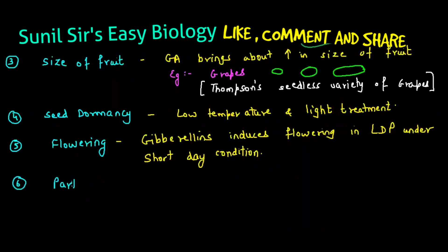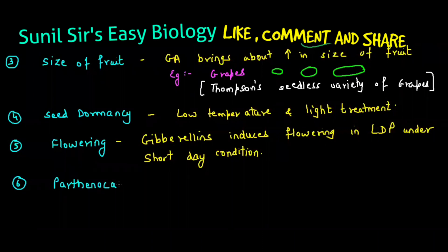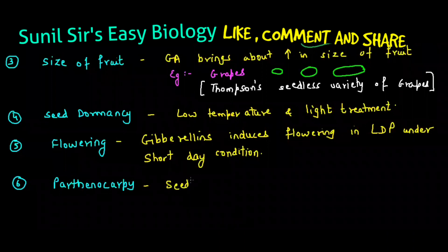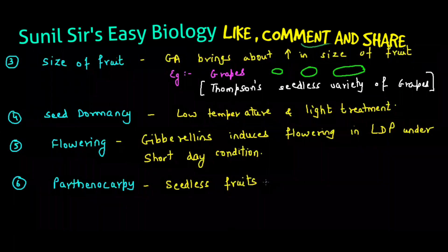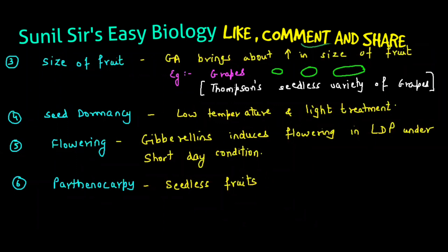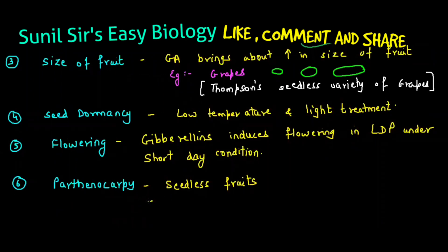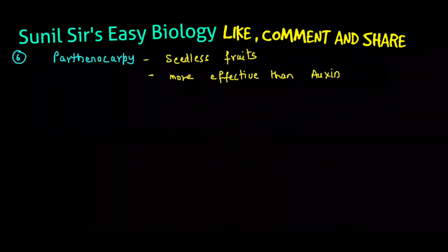Sixth function is parthenocarpy. Gibberellins helps in parthenocarpy. Parthenocarpy is the process of formation of fruits without fertilization and pollination. All fruits formed by parthenocarpy will be seedless fruits. So if you want to produce seedless fruits, treat the fruit with Gibberellins. This is more effective compared to auxin — auxin also causes parthenocarpy, but Gibberellins is more effective.